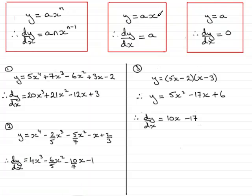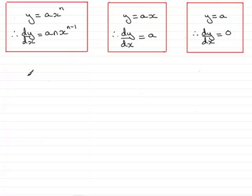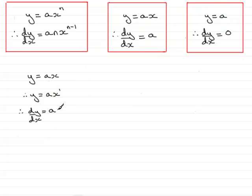I did say I would show you how we prove these particular results. To prove that if y equals ax then dy/dx equals a: we can think of y equals ax as y equals ax to the power 1. Multiplying the 1 by a gives a, and reducing the power by 1 gives x to the power 0. Anything to the power 0 is 1, so that's a times 1, which equals a. So if y equals 3x, dy/dx is 3; if y equals minus 5x, dy/dx is minus 5. In general, if y equals ax, dy/dx equals a.